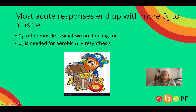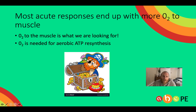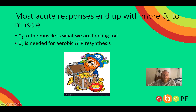It's a pretty important point to really get your head around: most acute responses are going to end up with more oxygen at the muscle. O2 is really important. The muscles really want this oxygen, and we need it for aerobic ATP resynthesis. The more aerobic ATP resynthesis we can do, the faster and longer we'll be able to run.